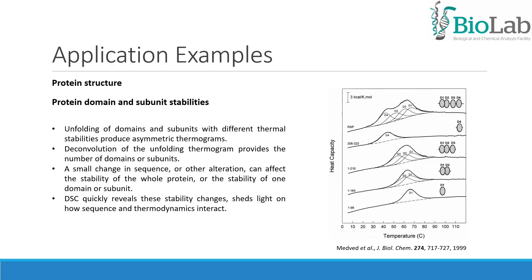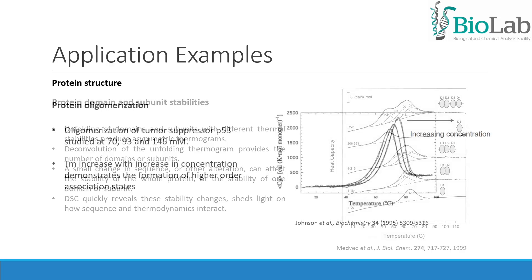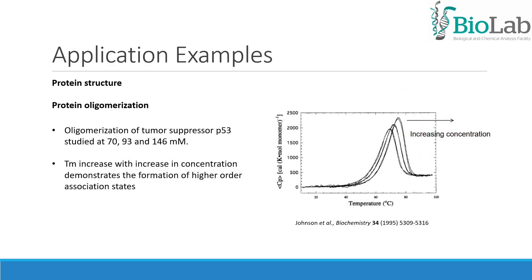DSC quickly reveals these stability changes and can also shed light on protein oligomerization. In this example, oligomerization of tumor suppressor P53 was studied at 70, 93 and 146 millimolar. Tm increased with increasing concentration, demonstrating the formation of higher-order association states.